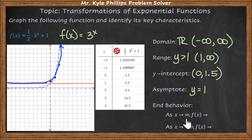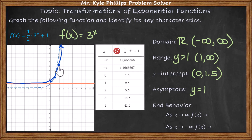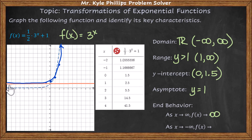End behavior — this always seems to throw people off. As x moves to positive infinity, all that means is look to the right of your graph. As I move to the right, what are the y values doing? Starting at 0, my y values are increasing, getting larger. So the further I move to the right, the larger the y value becomes — if I moved infinity to the right, the y values are moving to infinity. As I move to the left, starting from 0, my y values are getting infinitely close to the number 1 — they are approaching the horizontal asymptote.